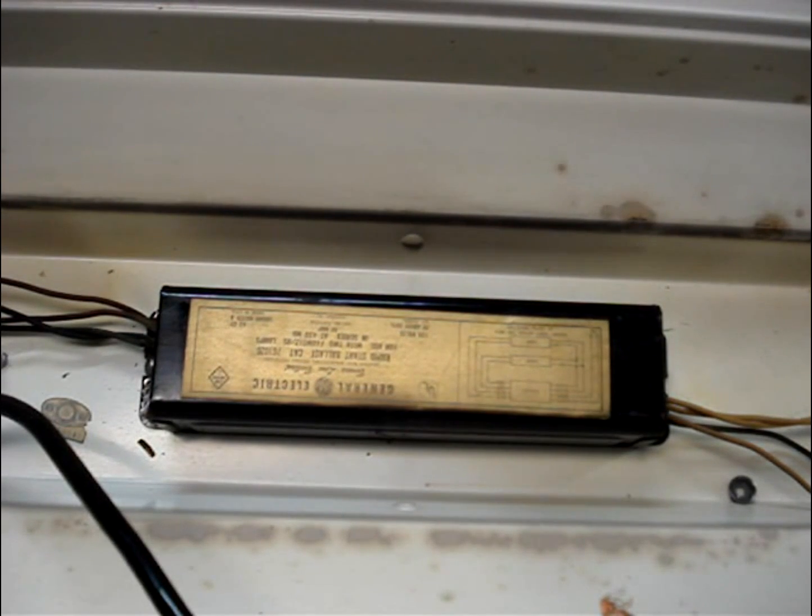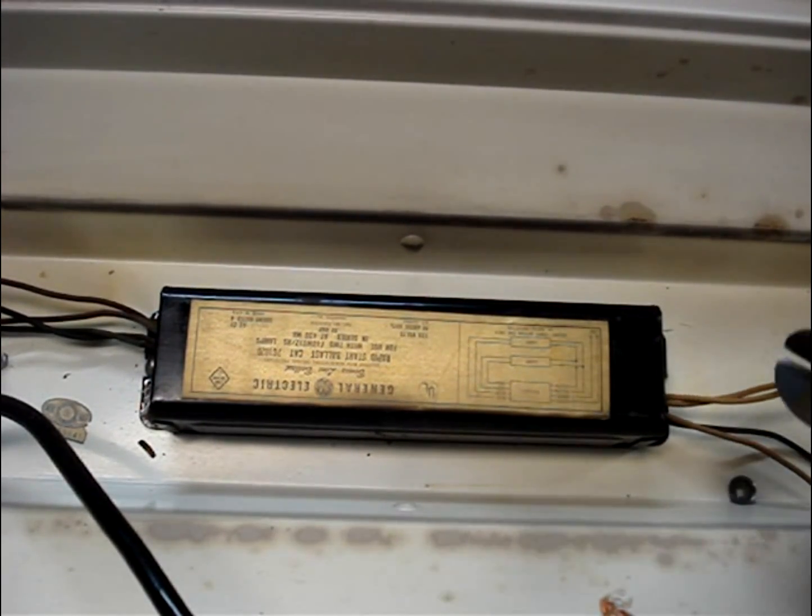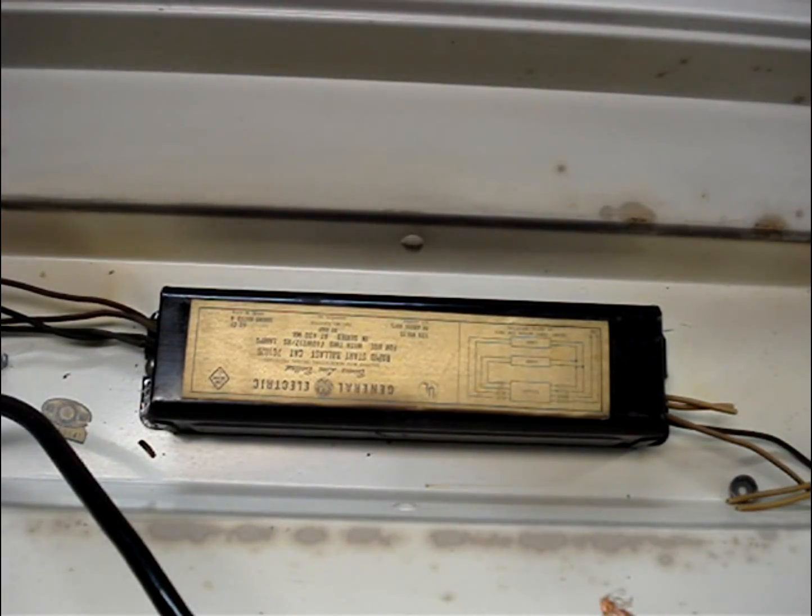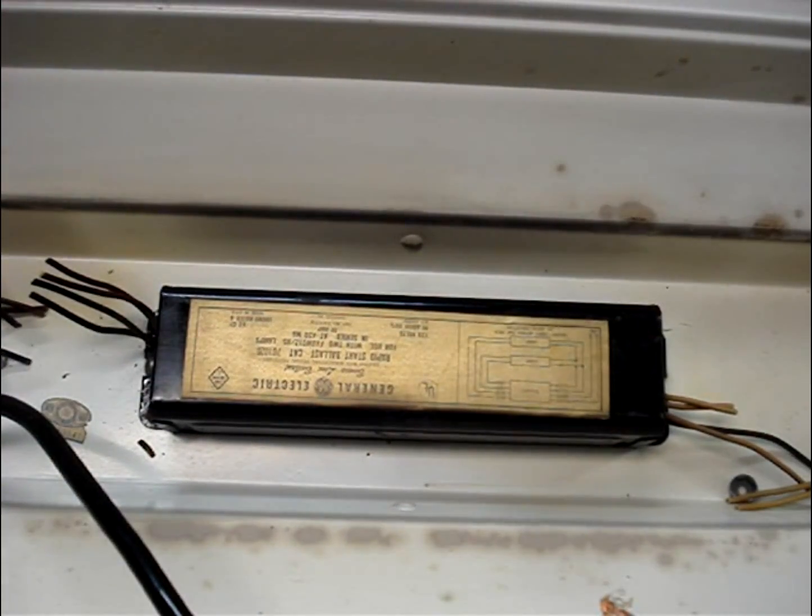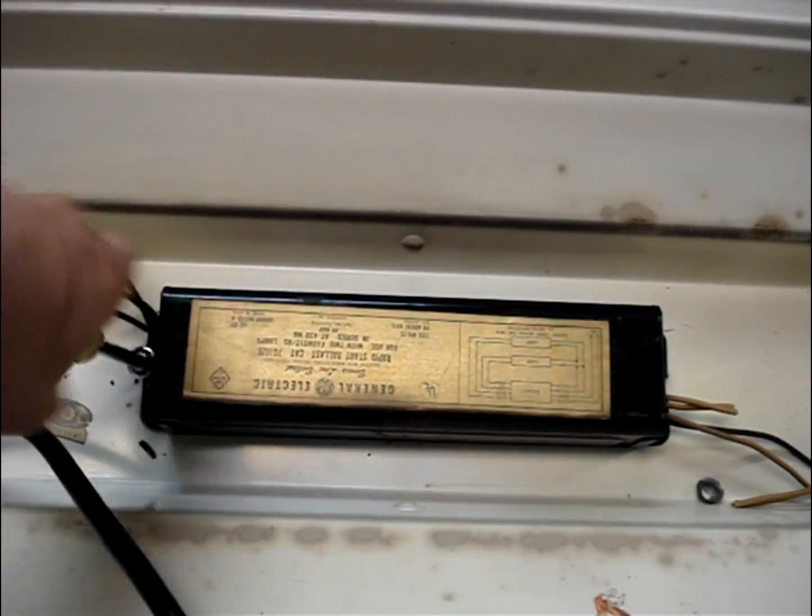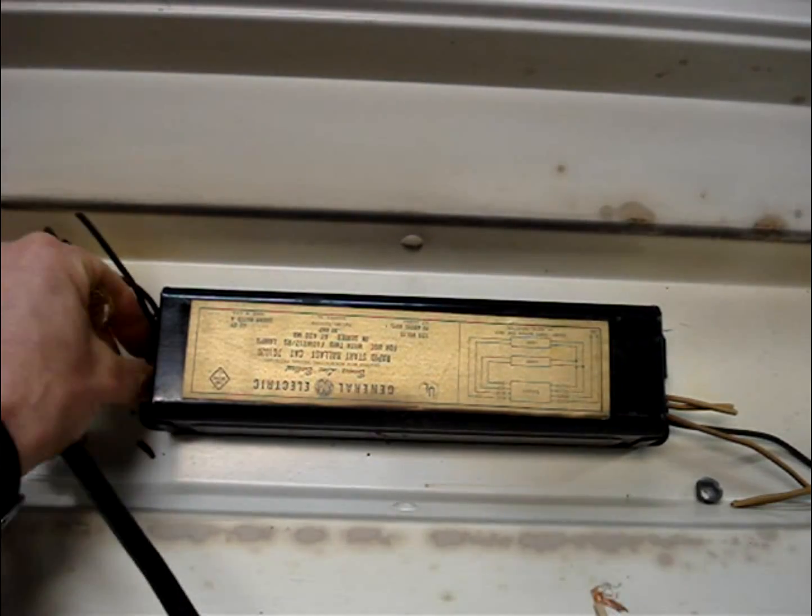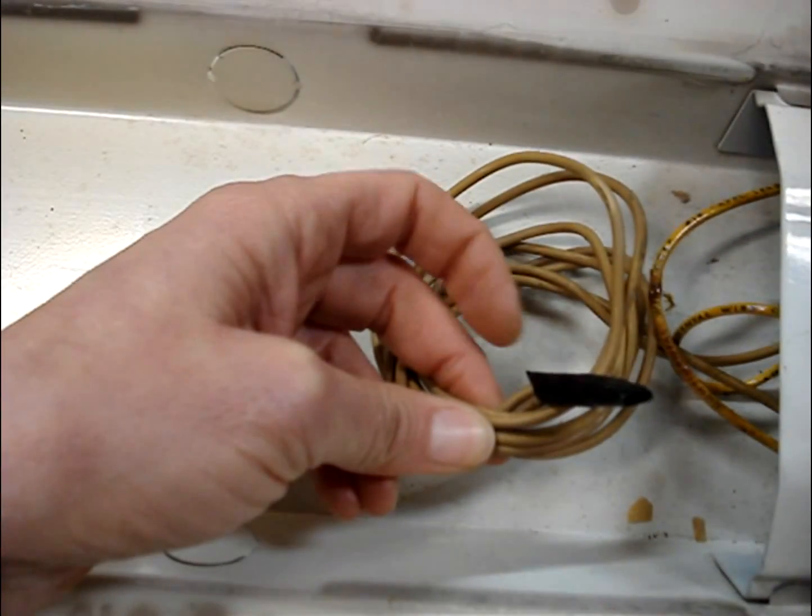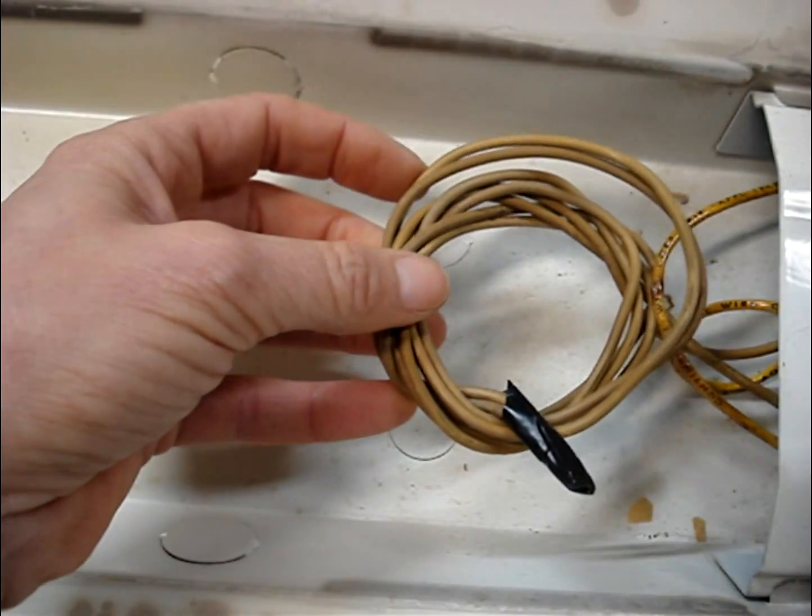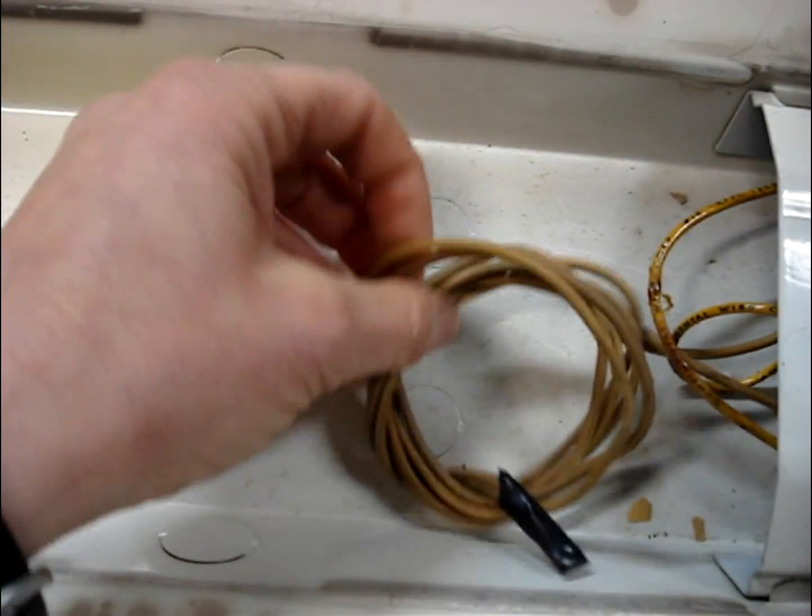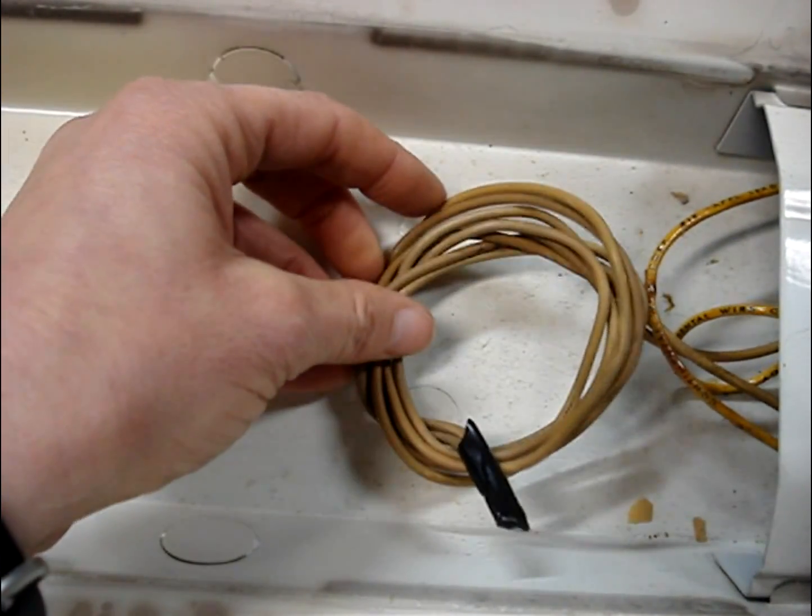If you think there's a chance that you'll use fluorescent bulbs in the fixture again, you can leave the ballast in place. However, I'm going to remove mine. I've taped the ends of the wires that went from the ballast to the tombstones and coiled it up, and I'll stow those away.